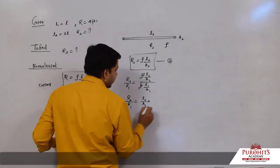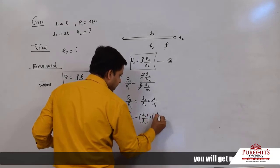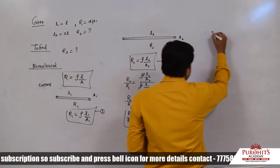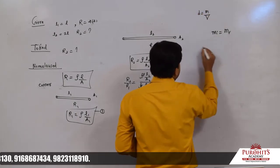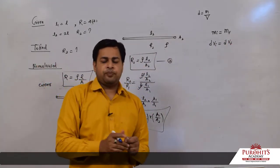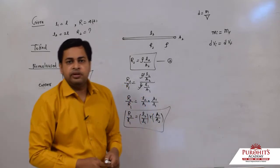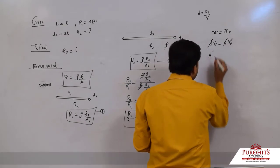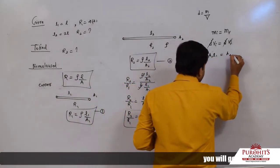Now by conservation of mass — the mass of copper at the start equals mass at the end. Since density doesn't change (whether you hammer iron, copper, or gold, density remains the same), initial volume equals final volume. For a wire, volume = area × length, so A₁·l₁ = A₂·l₂.